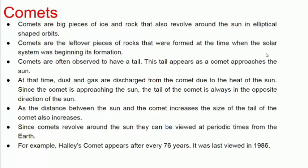As the distance between the sun and the comet increases, the size of the tail of the comet also increases. Since comets revolve around the sun, we can only see them at a specific time — they have a fixed period. For example, Halley's Comet has a period of 76 years. It was last seen in 1986 and will next be seen in 2062.